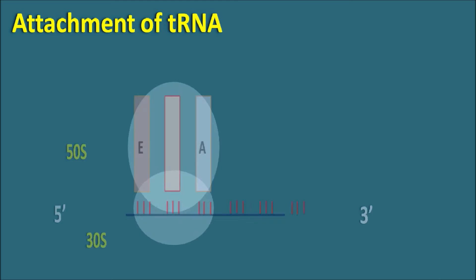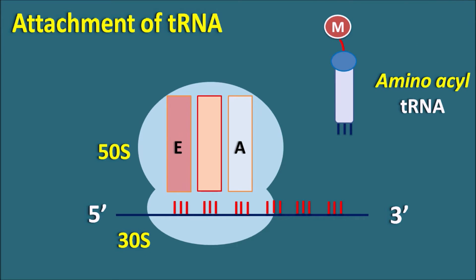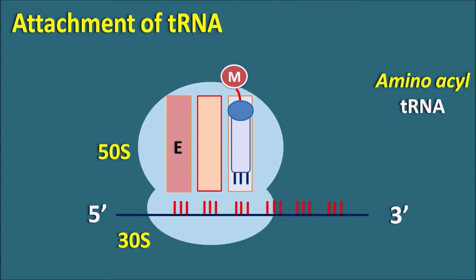One important step in protein synthesis is the attachment of tRNA to the 50S subunit. The tRNA brings each amino acid in the form of aminoacyl-tRNA, which is the active form. This tRNA is attached to the A site where it matches with the codons present on the mRNA. Within this step we can observe codon-anticodon pairing, which recognizes the amino acid according to the codon present in the mRNA.